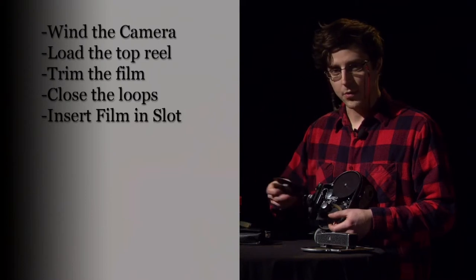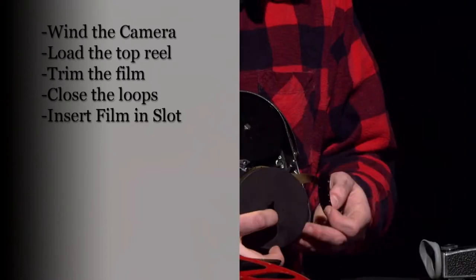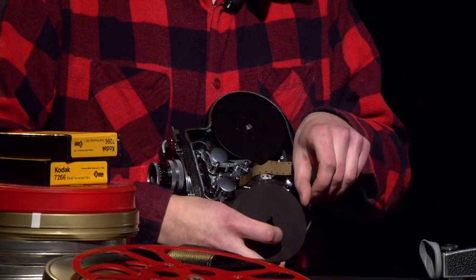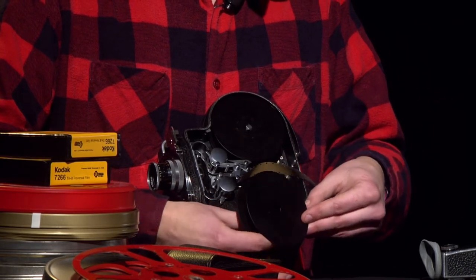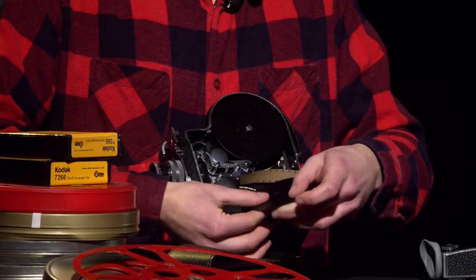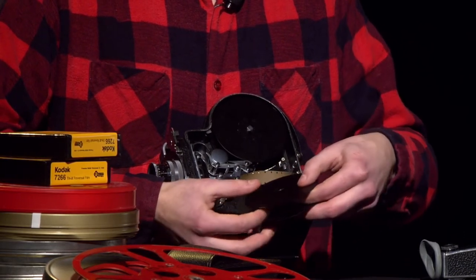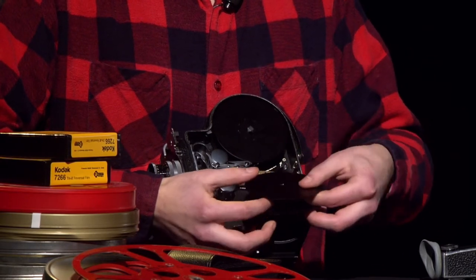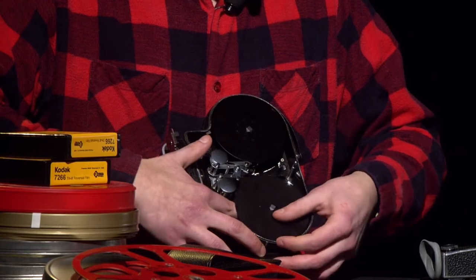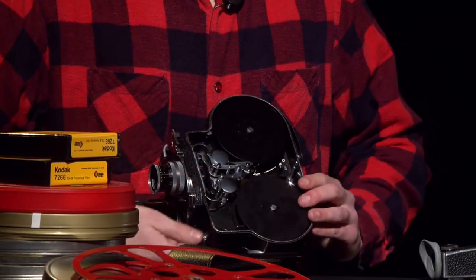Now, you are going to take your take-up reel and attach the film into the little slot in the center. Slide it in there. Give it a little wind-up to make sure that it doesn't come off when you are shooting, and snap it into place.